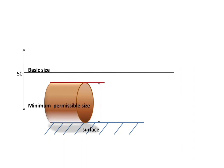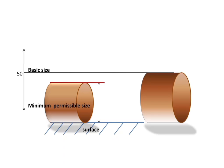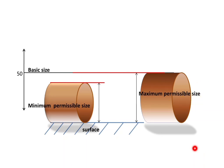This is the minimum permissible size of the job, that is the lower limit, and this is the maximum permissible size of the job, that is the upper limit. The difference between the upper limit and lower limit is tolerance.